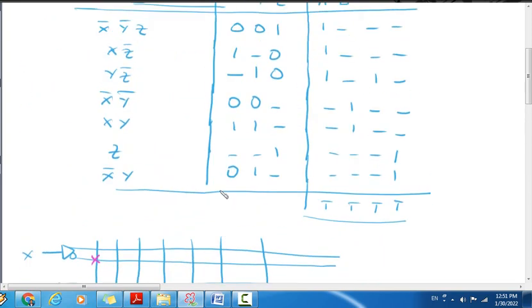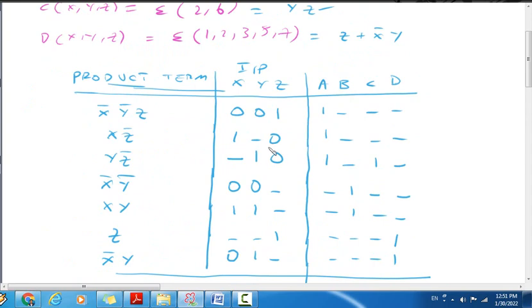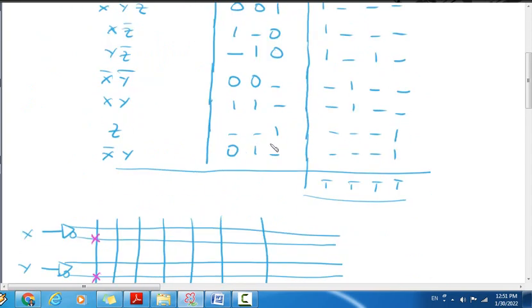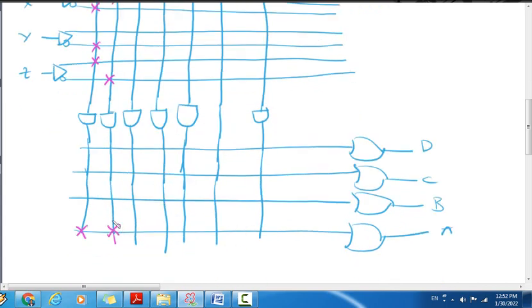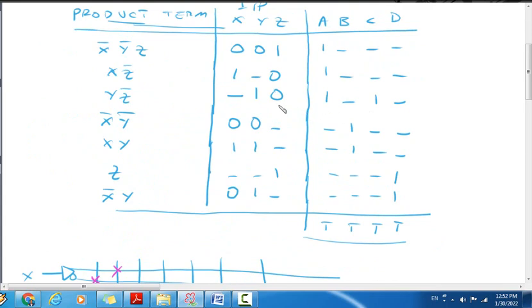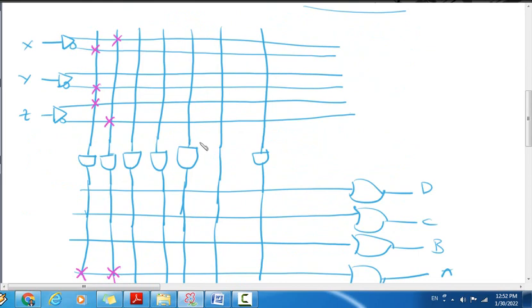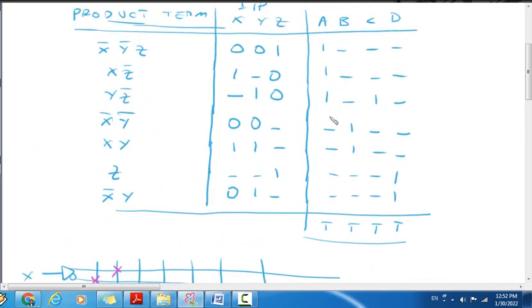For 1, dash, 0, we connect X and Z bar. For 0, 1, dash we connect X bar and Y. Each connection corresponds to a product term in our table.